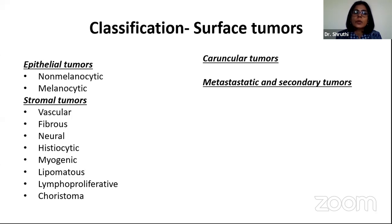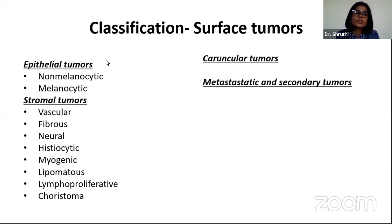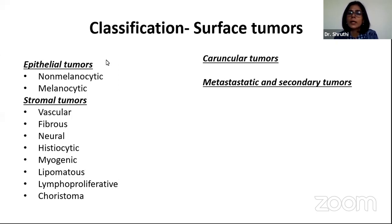Surface tumors are divided into epithelial tumors, stromal tumors, caruncular tumors, metastatic and secondary tumors. The epithelial tumors are where we are concentrating, and they include non-melanocytic and melanocytic tumors. In the stromal tumors, we have vascular, fibrous, neural, histiocytic, myogenic, lipomatous, lymphoproliferative, choristomas, caruncular, and metastatic and secondary tumors as well.